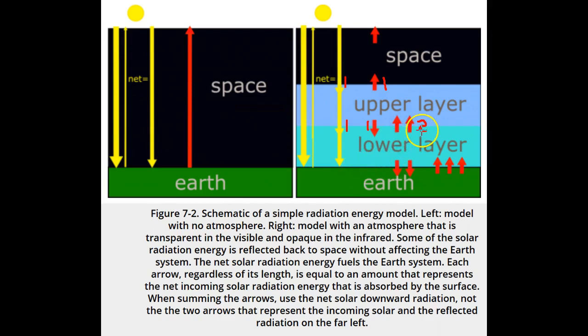And since the lower layer also has a uniform temperature, it must also be emitting two arrows down to Earth's surface.